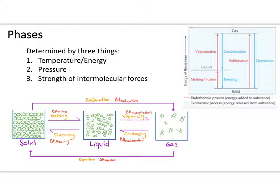Removal of energy is represented by blue lines, showing condensation and freezing. These processes are exothermic because the system is losing heat. These transitions are represented by specific enthalpy values: delta H of fusion, delta H of vaporization, delta H of freezing, and delta H of condensation — all representing the energy associated with each phase change.